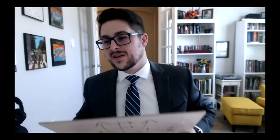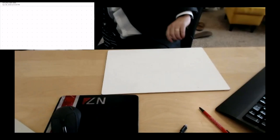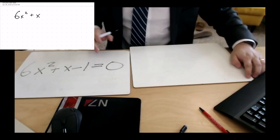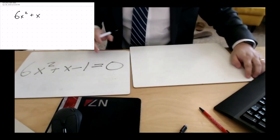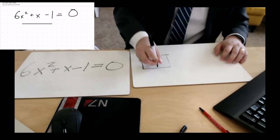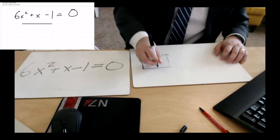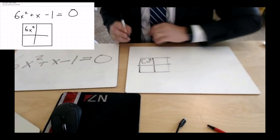Yes, and I'm sure our kids are hollering that we could use the box method. Let's give that a shot. So we said our problem was 6x² plus x minus 1 equals 0. Draw a window pane with four areas — something like this. In the top left one, you're going to put your 6x². And then in the bottom right, you're going to put negative one.